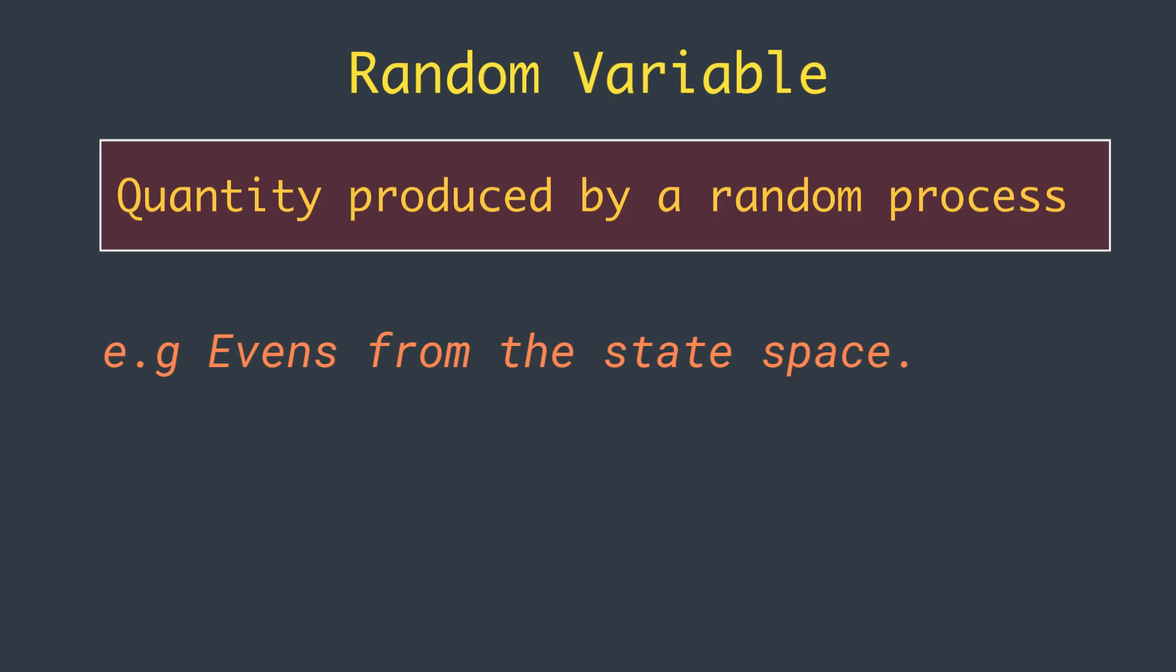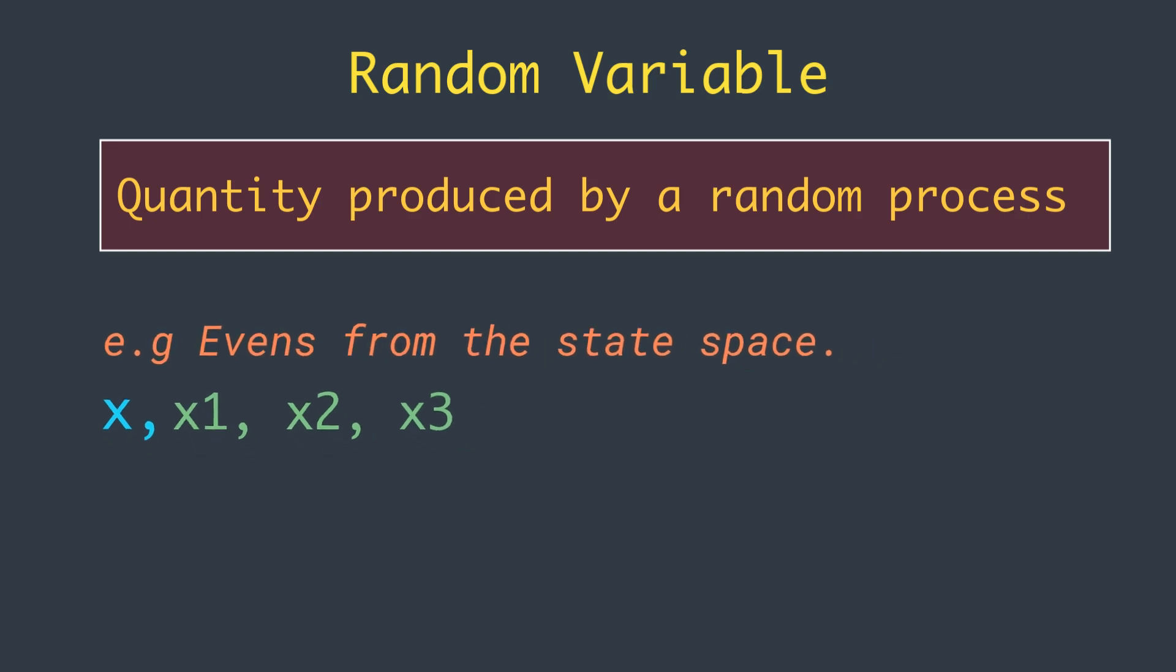A random variable is often denoted as a capital letter, for example capital X, and values of the random variable are denoted as a lowercase letter and an index, for example X1, X2, X3, and so on.